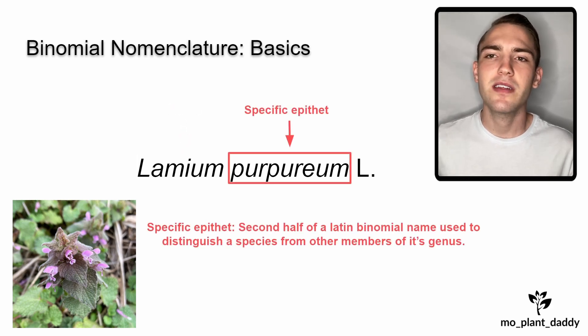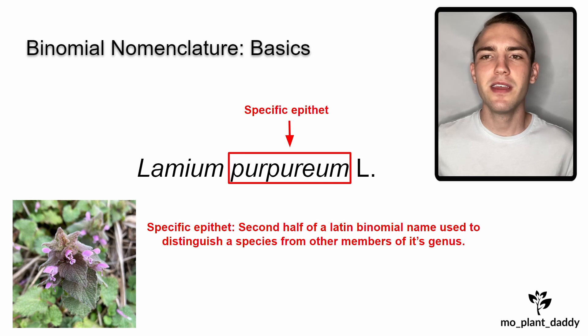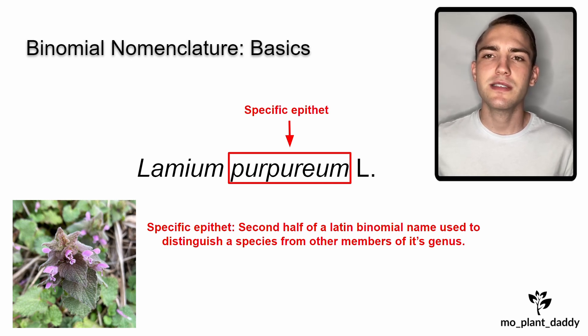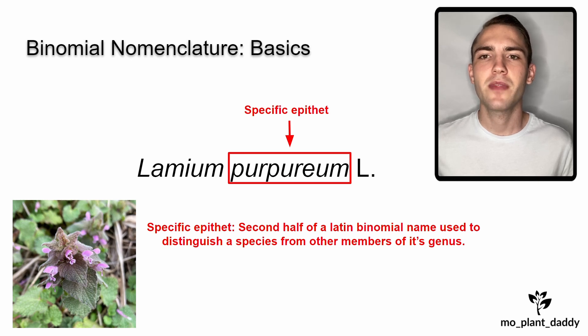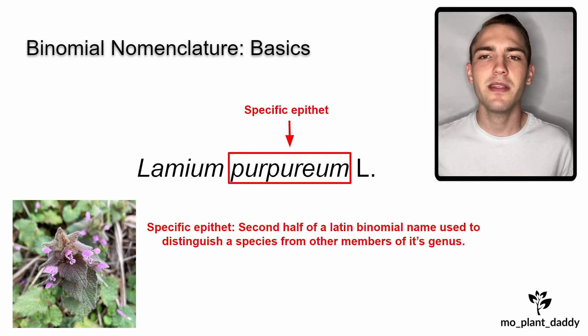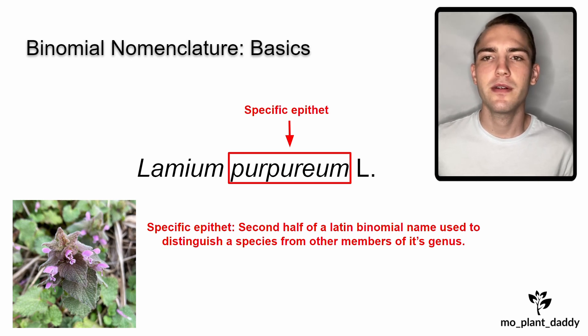The second part of the Latin binomial is the specific epithet. This is used to distinguish a species from other members of its genus. In this case, the specific epithet is purpureum.